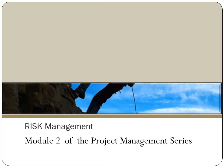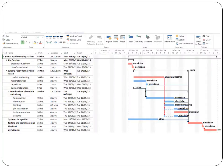Welcome to Risk Management Module 2 of the Project Management Series. Up until this point, we've basically defined our complete project. Project scheduling and planning for cost control has been complete. Scope, time, resources — all of that has already been defined.